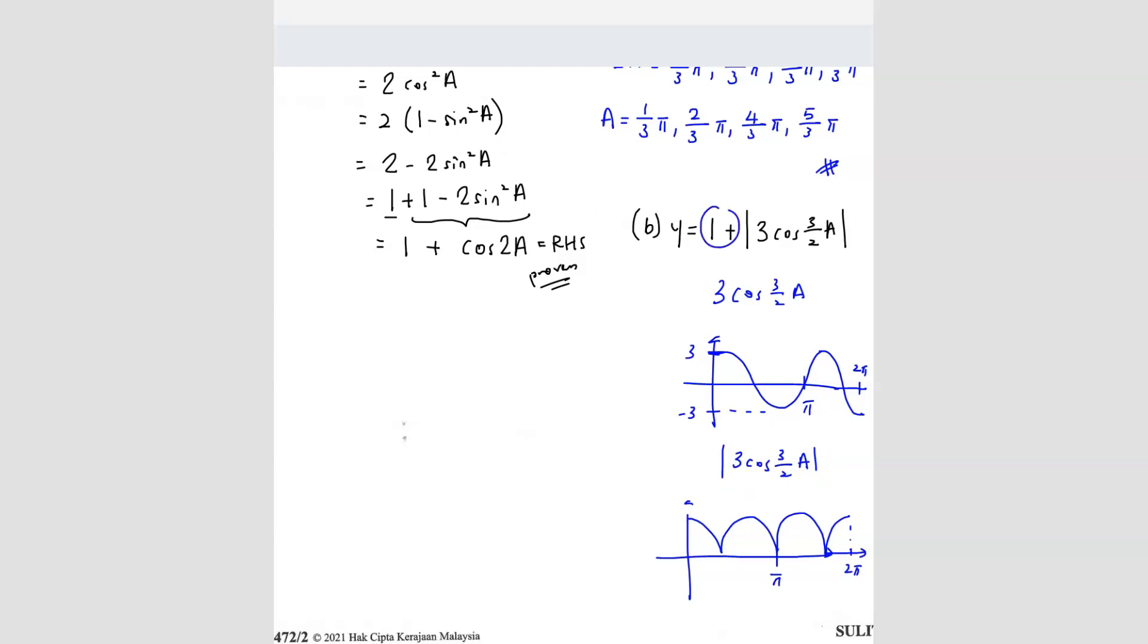Now you got one more here, plus 1. Plus 1 means what? Plus 1 means you're going to shift the whole graph by 1 unit, up by 1 unit. So that means initially here is 3, and then down here is negative 3. But no more negative 3 because you already make it positive. So you're going to shift this up. So the graph is going to be floating. So your answer is going to be like this. I'm going to draw the final answer. Final answer is going to be 1, 2, and half. Here is pi, here is 4.